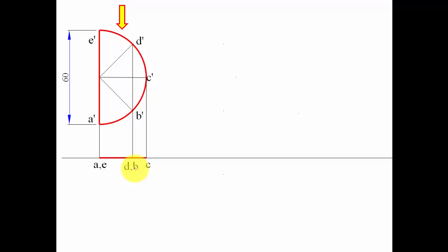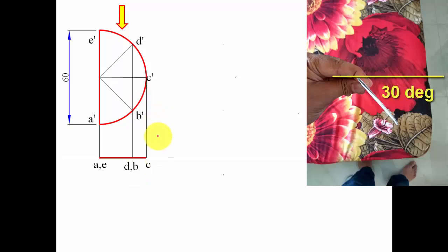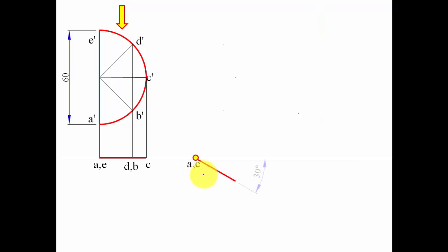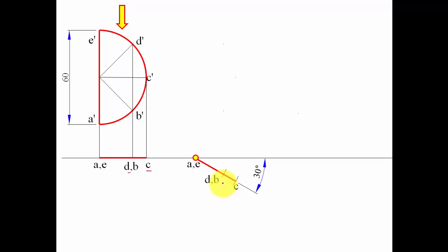In step two, we incline the surface to the VP at 30 degrees. The top view line is recreated at an angle of 30 degrees, with point a, e still in contact with the XY line — still in the VP. To locate points d, b and c: keep one leg of the compass at a, e, other leg at the point, and with a, e as center, put an arc. This gives us d, b and similarly point c.